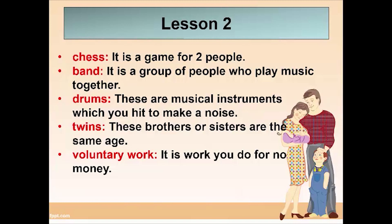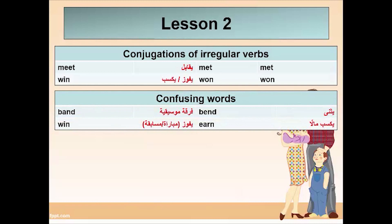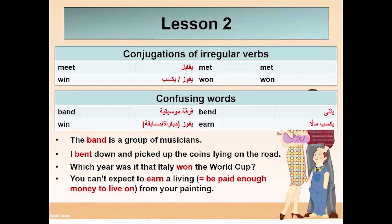We have some conjugations of irregular verbs: meet, met, met; win, won, won. We have some confusing words: band and bend. 'The band is a group of musicians.' 'I bent down and picked up the coins lying on the road.' Win and earn: 'Which year was it that Italy won the World Cup?' 'You can't expect to earn a living' means you can't expect to be paid enough money to live on from your painting.